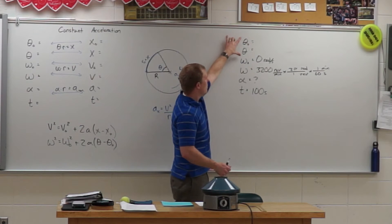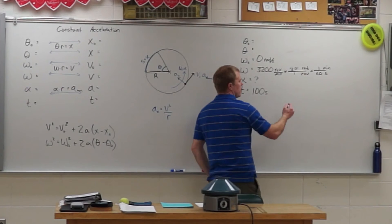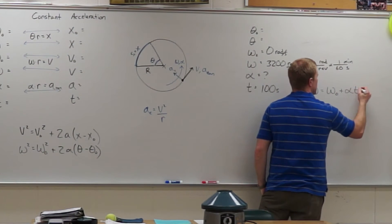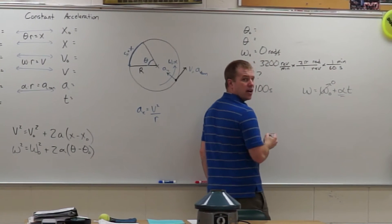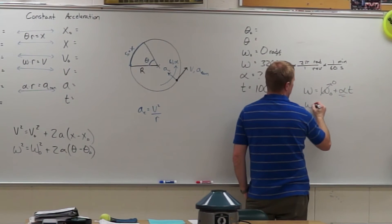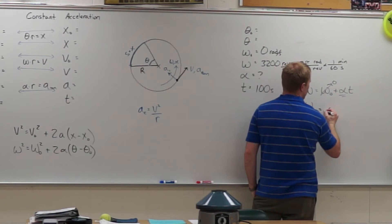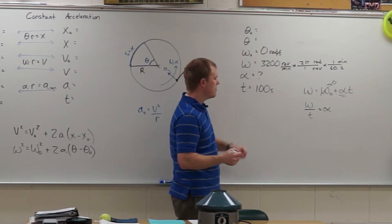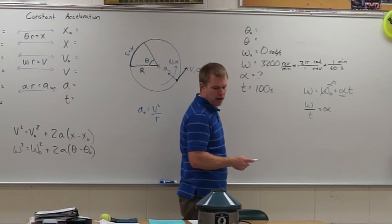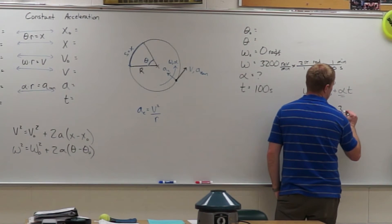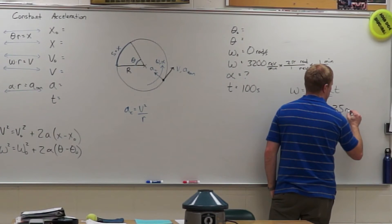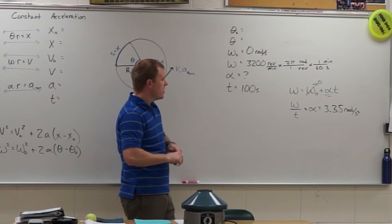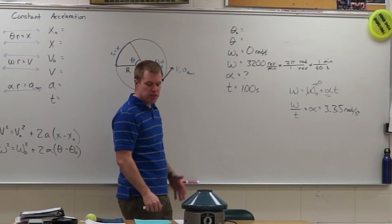So what equation should I pick? Well, pick one without theta. So that is going to be our omega equals omega initial plus alpha t. Crossing out that 0, solve for our unknown alpha. So I have omega divided by time equals alpha. I'll figure out what omega is, divide it by 100. And I get an alpha value of 3.35 radians per second squared. Is what its angular acceleration will be on its way up to speed.